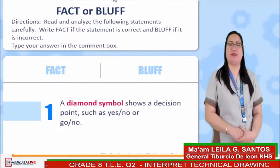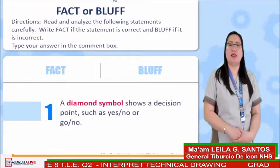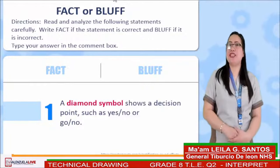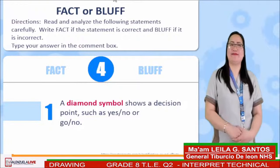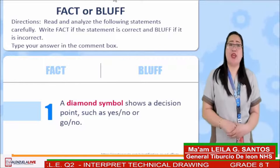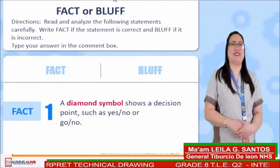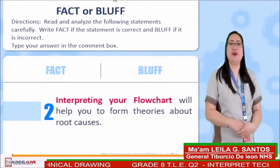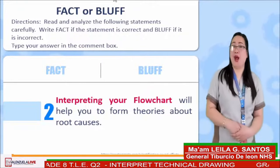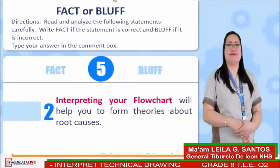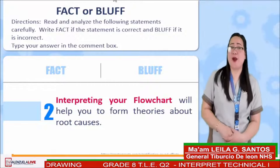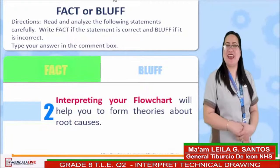Item number 1: A diamond symbol shows a decision point such as yes or no, or go/no go. Is it a fact or a block? Time's up — if your answer is 'fact,' terrific, that is correct. Item number 2: Interpreting your flowchart will help you to form theories about root causes. Time's up — if your answer is 'fact,' you nailed it, you've got the correct answer.